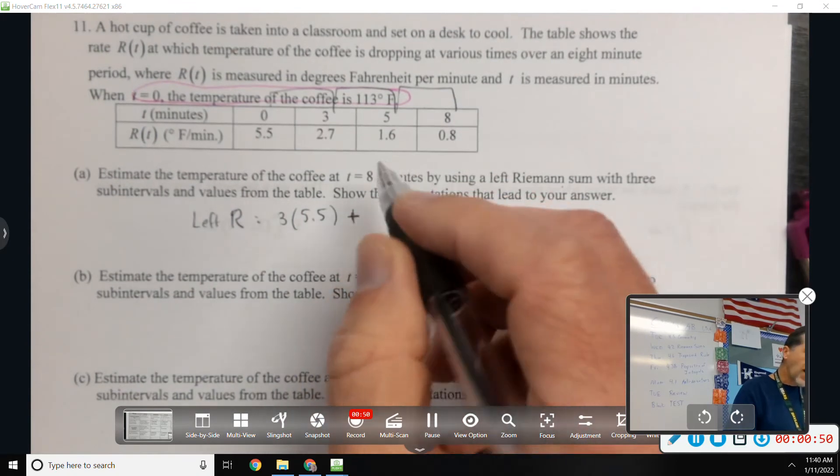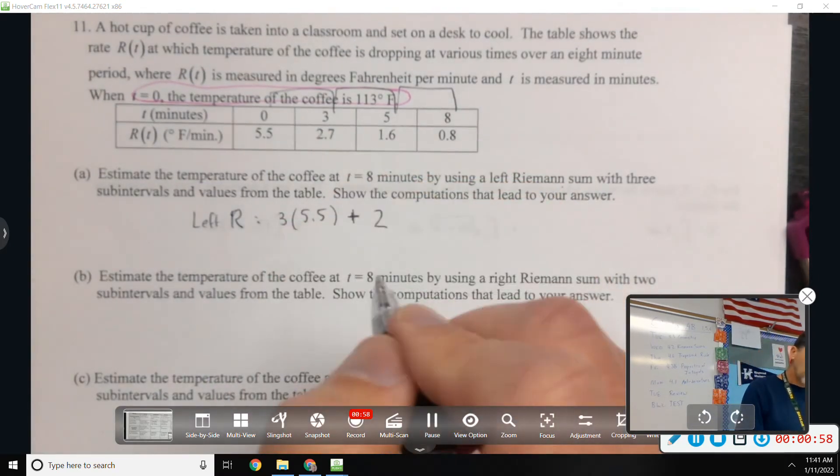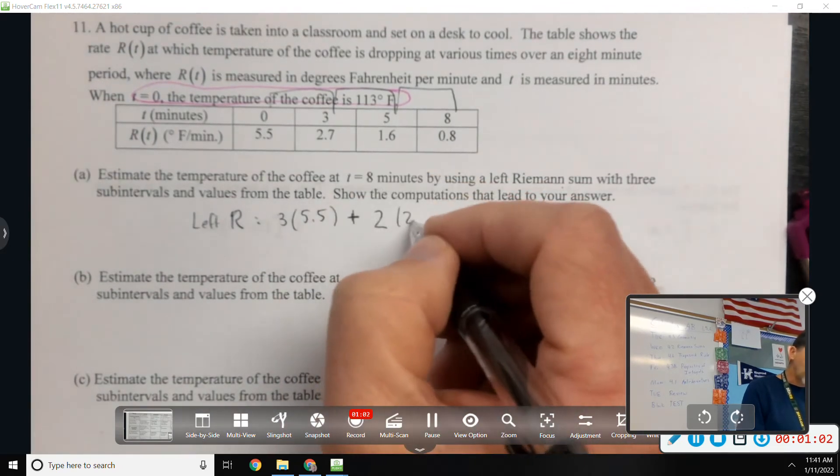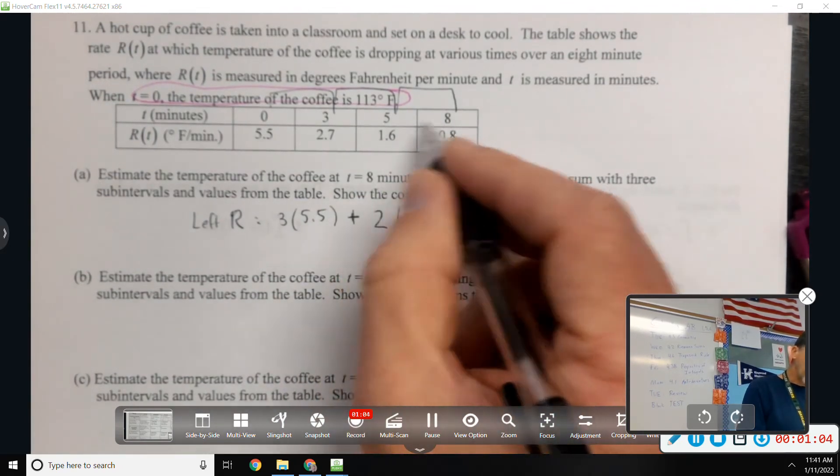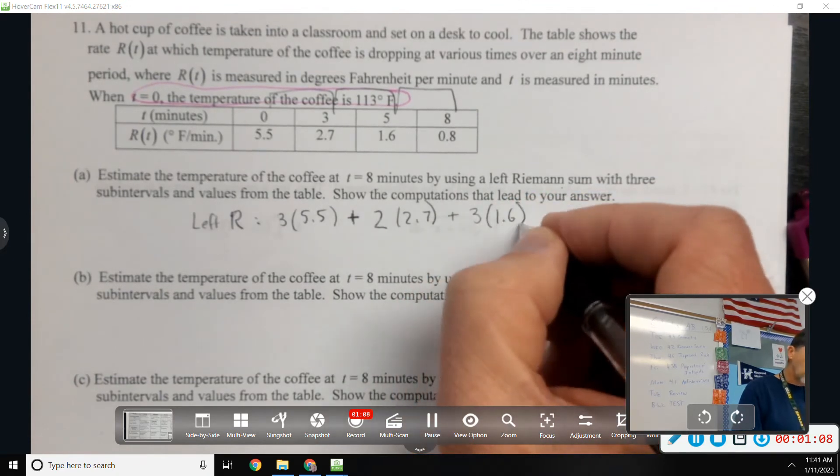And then from three to five, how wide is that interval? Two, so be careful. This is one that the intervals aren't equal width. And which value am I supposed to use? 0.7. Because it's the left. And then the last interval is three and 1.6.